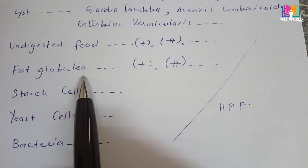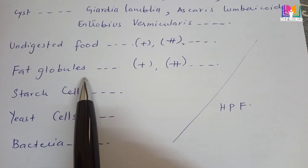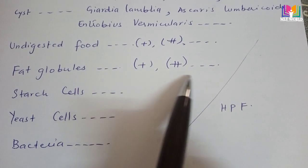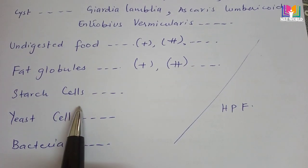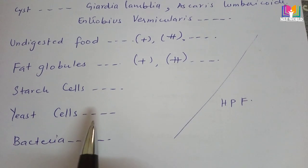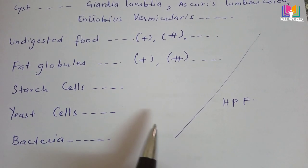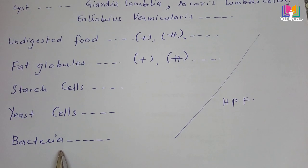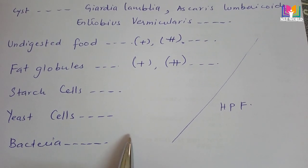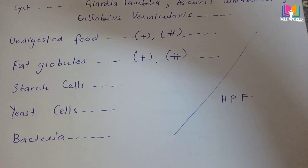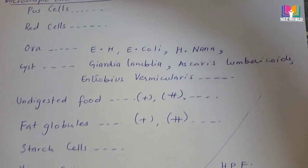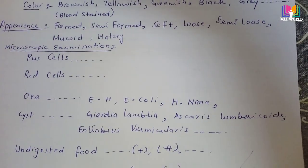If there is an indigestion problem, you may observe undigested food in the stool. In small children's stools, you may find fat globules, sometimes starch cells — which are like plant cells — and yeast cells and bacteria. These are additional points to mention in the report alongside parasites, pus cells, and red blood cells.